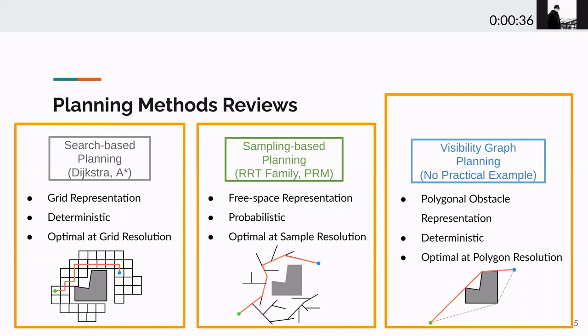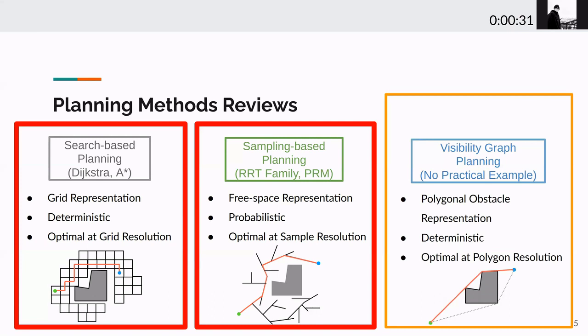So, how is the visibility graph planning different from the other two? The search-based planning and the sample-based planning both work on free space. The more the free space, the more computation on propagation.